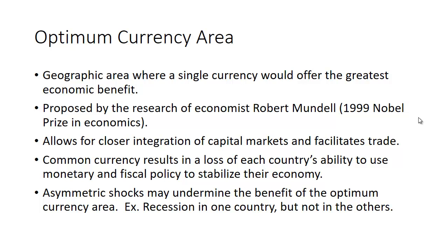An optimum currency area allows for closer integration of capital markets and facilitates trade. The problem is that a common currency results in a loss of each country's ability to use monetary and fiscal policy to stabilize their economy. Also, if there are asymmetric shocks — for example, a recession in one country but not in others — that may undermine the benefit of the optimum currency area.